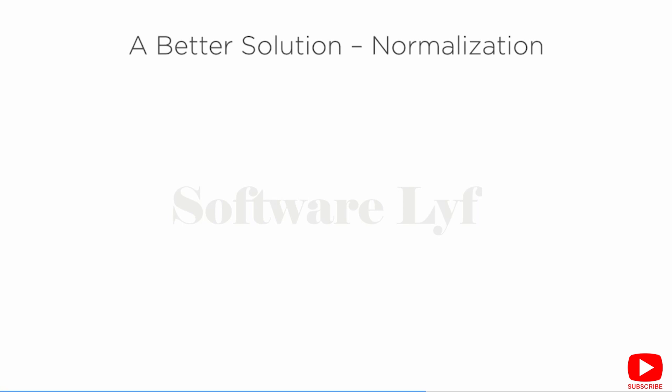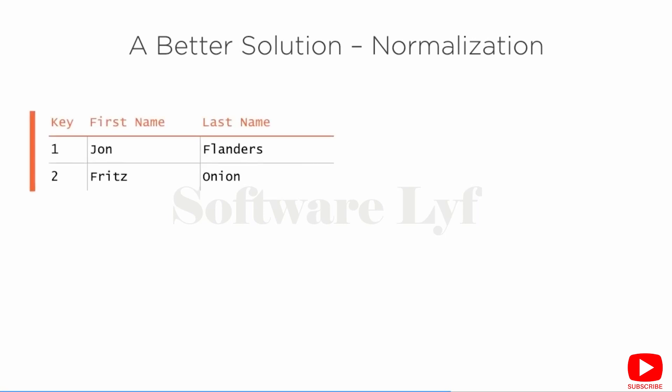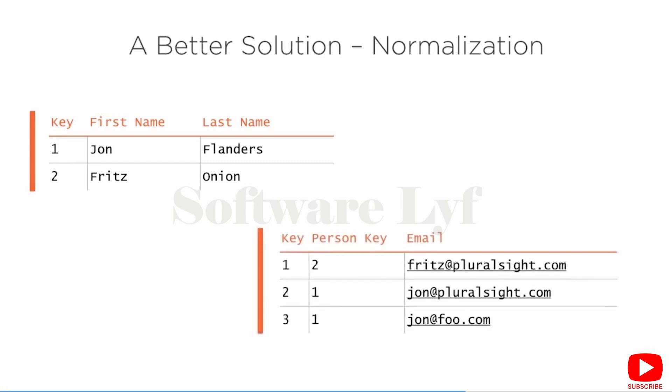In my simple example, what we would do is normalize that data by taking the email data out of the contact table and creating a separate table called email. What matters is the design. This really illustrates the idea of relational, because we have a relation between the person table and the email table. We're using keys — our way of matching up data between two tables — to create a relationship. Now the contact table has a relationship to the email table, and the email table has a relationship back to the person table, allowing us to ask better questions like: what are all of John's email addresses?